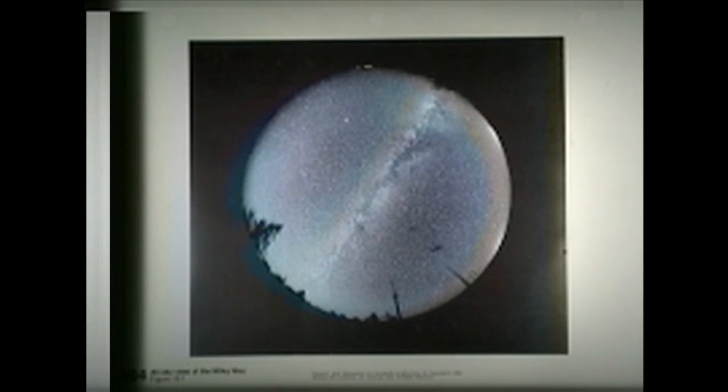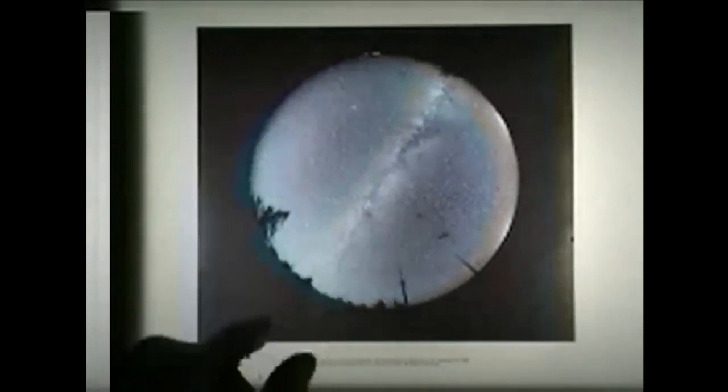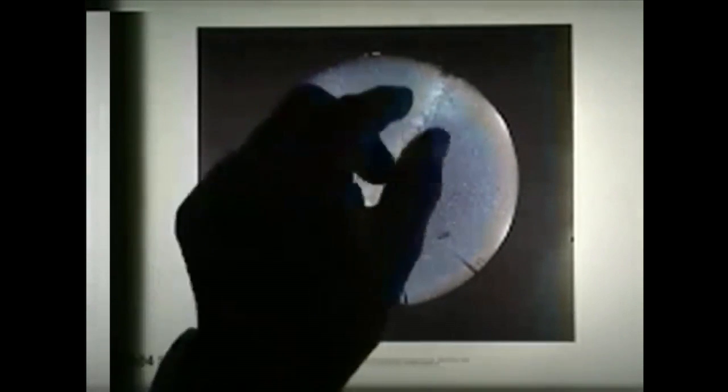That was called by ancient Greeks Galaxia Cuclus, by Romans Via Lactea, and translated into English, Milky Way. Since ancient times, people have noticed this diffuse band of light across the sky and named it the Milky Way.